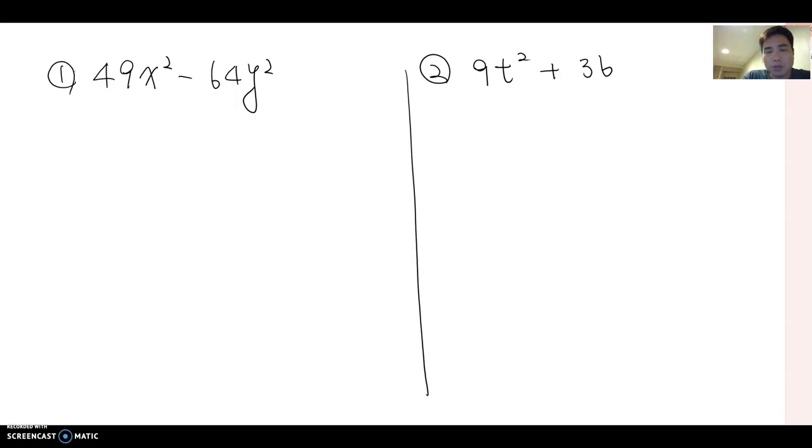Please pause this video and factor these two questions, then come back. Number one: 49x² - 64y². Can you make 49x² as something squared? Yes, this is (7x)². 64y² becomes (8y)².